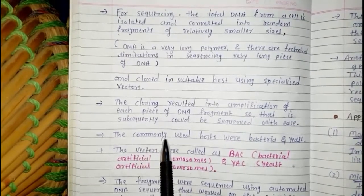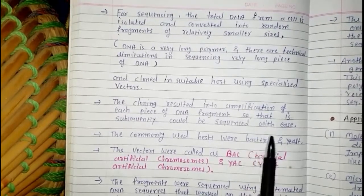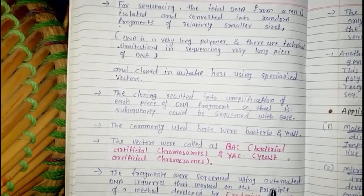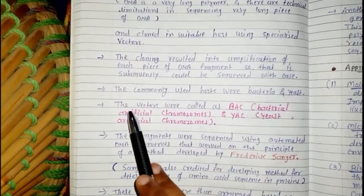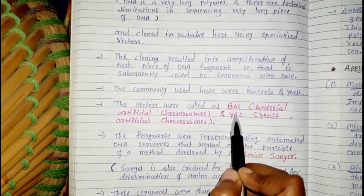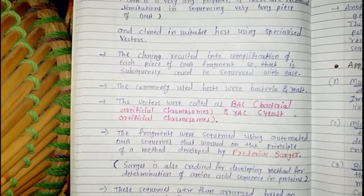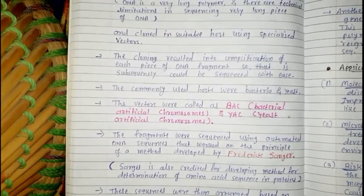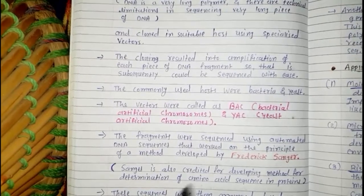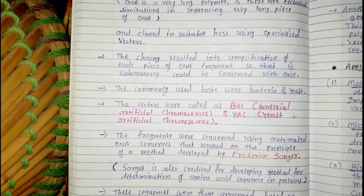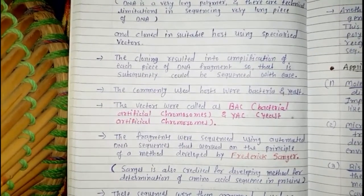The commonly used hosts were bacteria and yeast. The vectors used to insert the fragments were called BAC (Bacterial Artificial Chromosomes) and YAC (Yeast Artificial Chromosomes). These are specially laboratory-made vectors used to insert DNA sequences into the host for amplification and subsequent sequencing. More details about vectors and hosts are covered in the Biotechnology chapter (chapters 11–12).